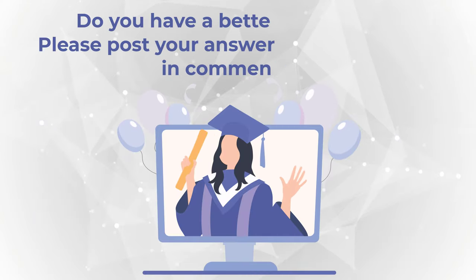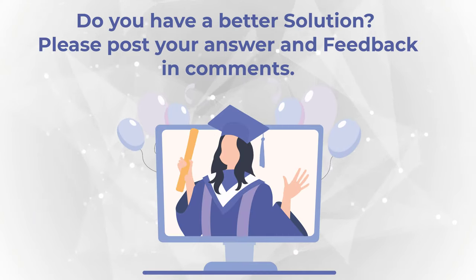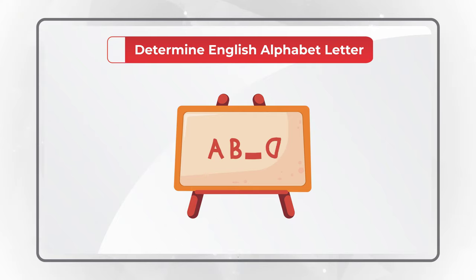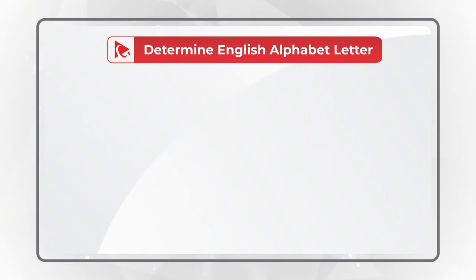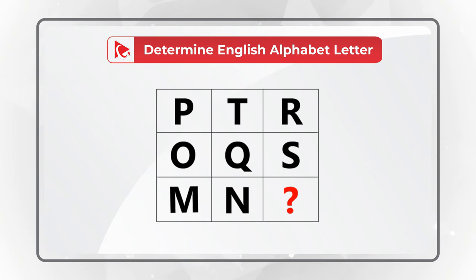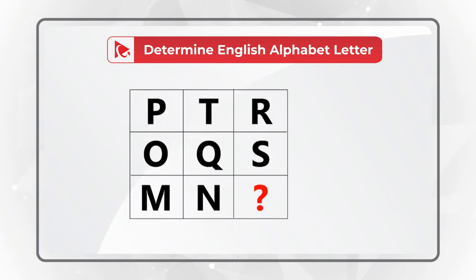Hopefully you've nailed this question and now know how to answer similar problems on the test. Here is one of my favorite questions to test your verbal reasoning as well as your knowledge of the English alphabet. You need to determine the missing letter of the English alphabet to replace the question mark. You are presented with a 3x3 matrix with letters P, T, R, O, Q, S, M, N, and then the missing letter.